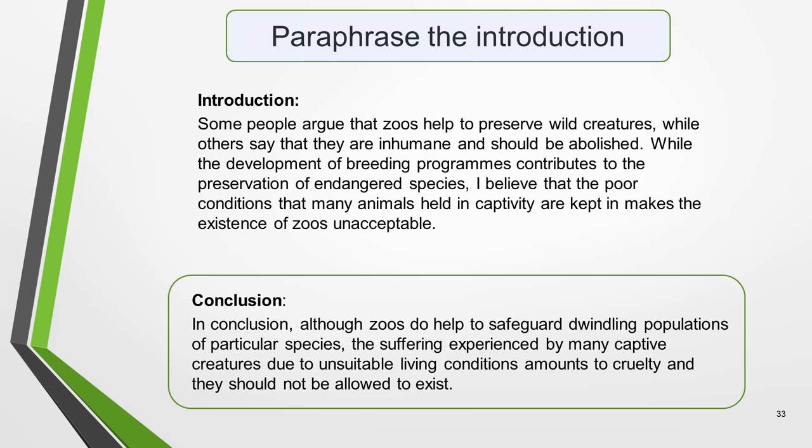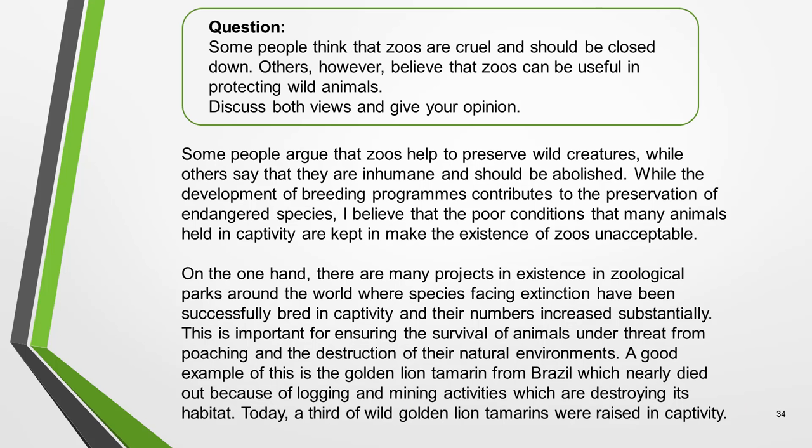Here's the introduction we wrote earlier: 'Some people argue that zoos help to preserve wild creatures, while others say that they are inhumane and should be abolished. While the development of breeding programs contributes to the preservation of endangered species, I believe that the poor conditions that many animals held in captivity are kept in makes the existence of zoos unacceptable.' And here's the same information formed into a conclusion: 'In conclusion, although zoos do help to safeguard dwindling populations of particular species, the suffering experienced by many captive creatures due to unsuitable living conditions amounts to cruelty, and they should not be allowed to exist.' Note how the information is paraphrased and synonyms are used. That's it — our essay is complete.